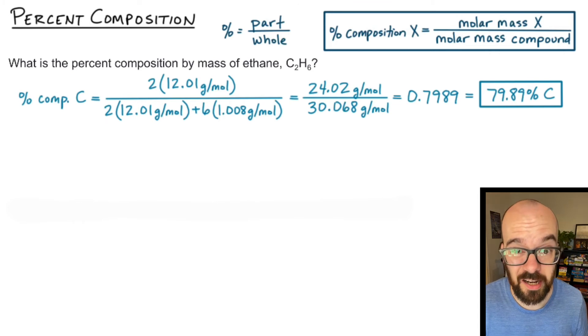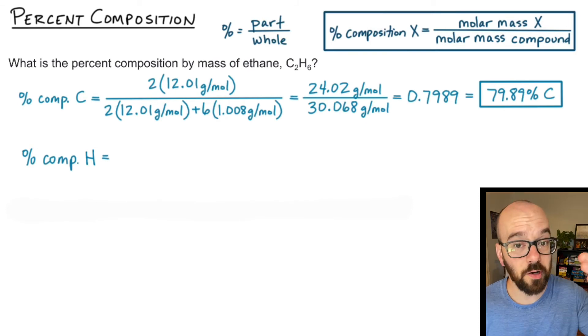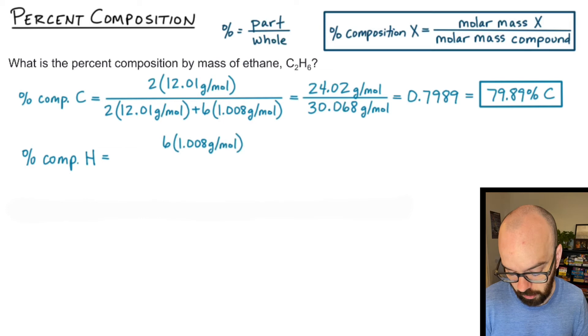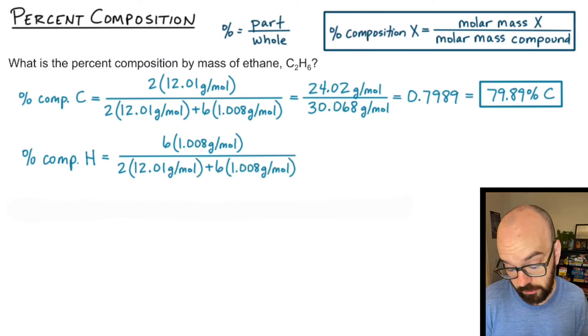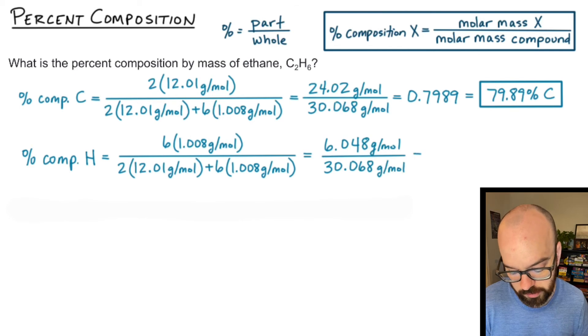Now I'm going to go through this whole process again for any other elements I have present in the compound. In this case I just have hydrogen so I'm going to set this up. Percent composition of hydrogen equals, on the numerator I'm going to have the molar mass of hydrogen multiplied by how many hydrogens there are, which there's six of them, and in the denominator I'm going to have the total molar mass of the compound which I'm going to find the same way. In fact I could just write 30.068 there because I already calculated that in the previous part.